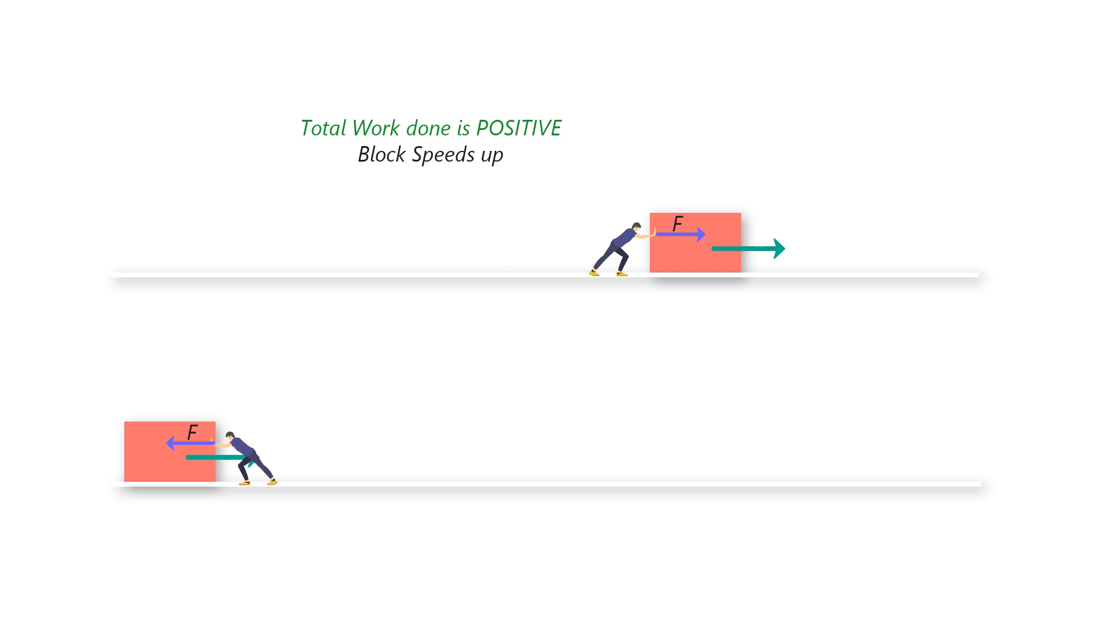A block slides to the right on a frictionless surface. If you push to the right on the moving block, the net force on the block is to the right, and therefore, the total work done on the block during a displacement S is positive, and the block speeds up.